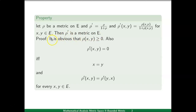To prove this, we will verify the four properties satisfied by rho dash to be a metric on E. The first property is to prove that rho dash xy is greater than or equal to 0. This is obvious because rho is given as a metric on E, therefore rho xy is greater than or equal to 0, which implies rho xy upon 1 plus rho xy is also greater than or equal to 0, showing that rho dash xy is greater than or equal to 0 for xy in E.